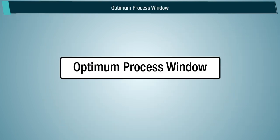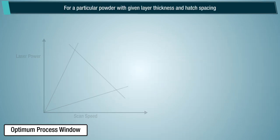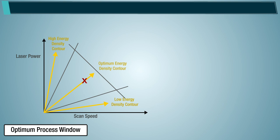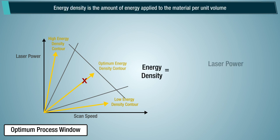Optimum process window. For a particular powder with given layer thickness and hatch spacing, there is an optimum energy density that creates a melt pool of the optimum depth and width. Energy density is the amount of energy applied to the material per unit volume.